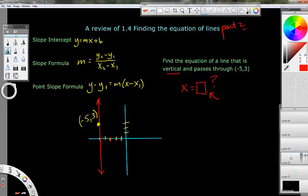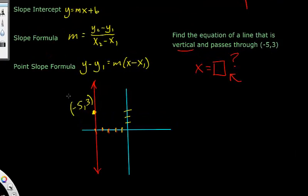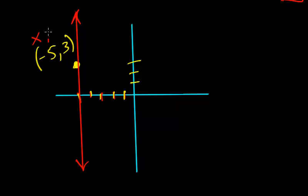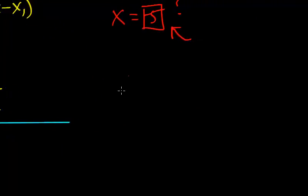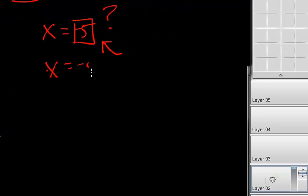Well, that would just be how far over it is. So, it's over 5 or negative 5. It's the X coordinate of this XY point here. So, it would be negative 5. So, the answer is just X equals negative 5. Now, if we flip this around.